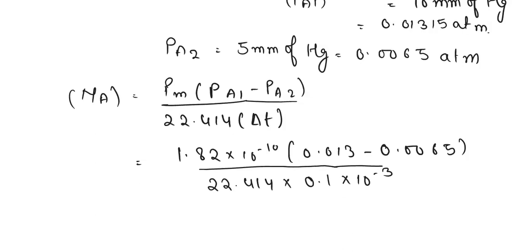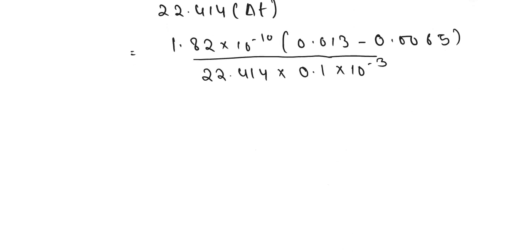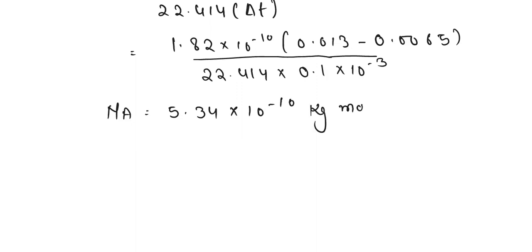The value of NA comes out to be equal to 5.34 into 10 to the power minus 10 kilogram mole per meter square per second. Now we have to find the mass transfer rate.